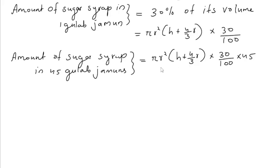By giving values, we get 22/7 into radius is 1.4, so 1.4 into 1.4, inside the bracket. When we multiply 4 into 1.4, we get h is 2.2 plus 4/3 into 1.4 into 30/100 into 45.